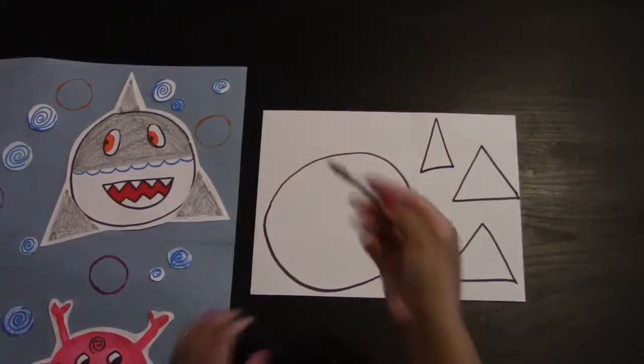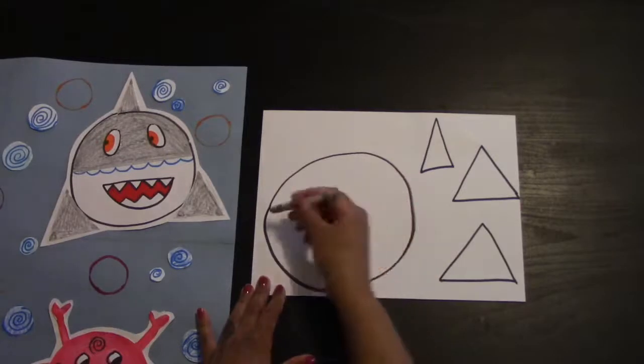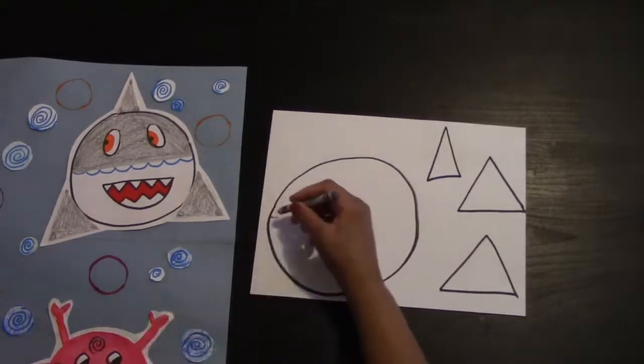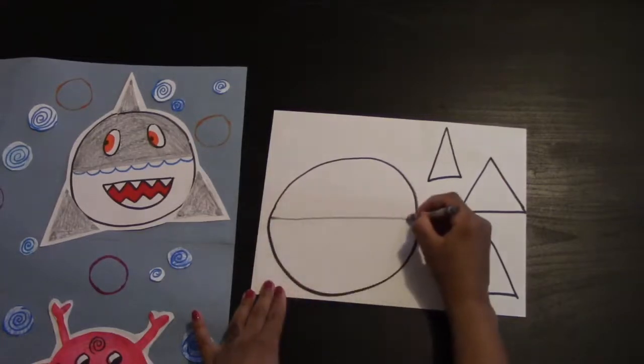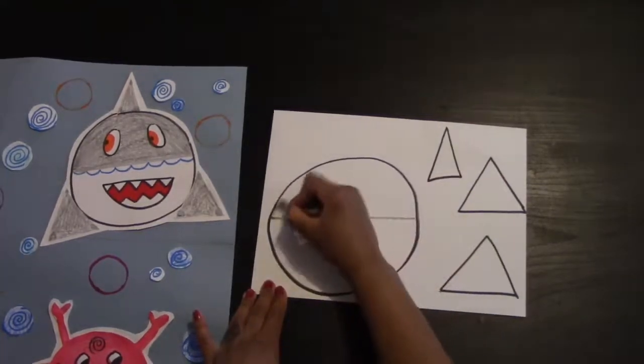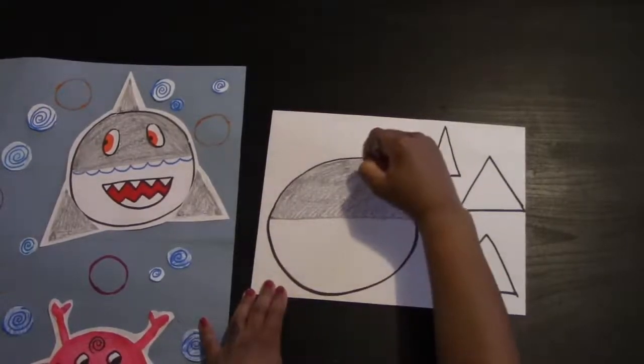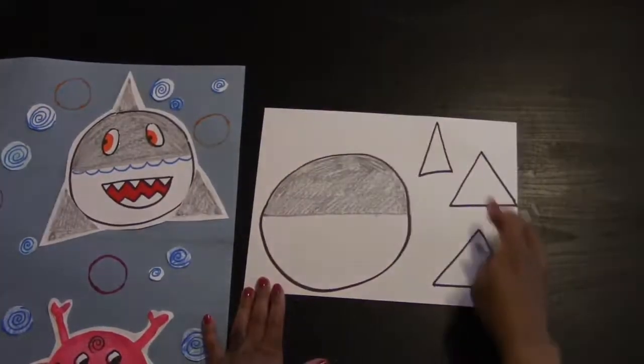Next we're going to take a gray crayon or marker and draw a line separating two halves of the circle. We're going to color in one half. This is going to represent the gray and white parts of the shark.